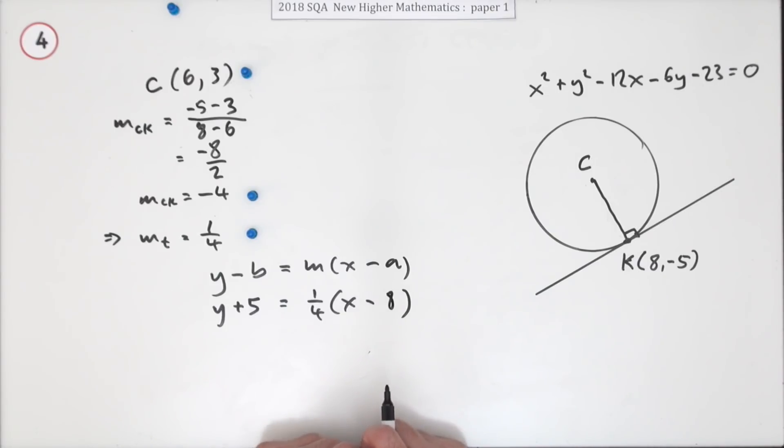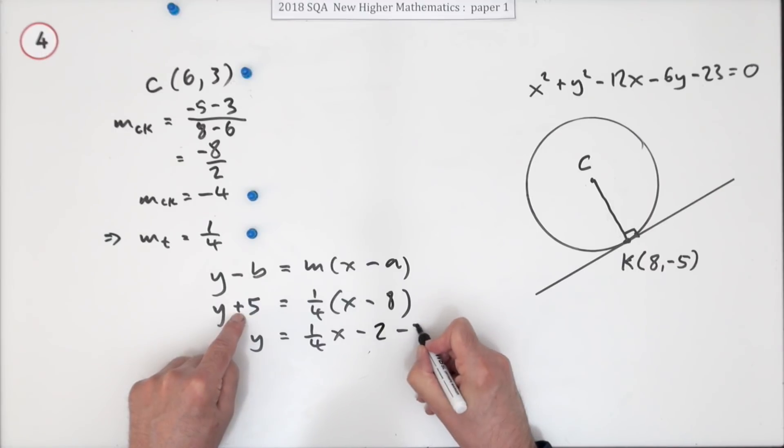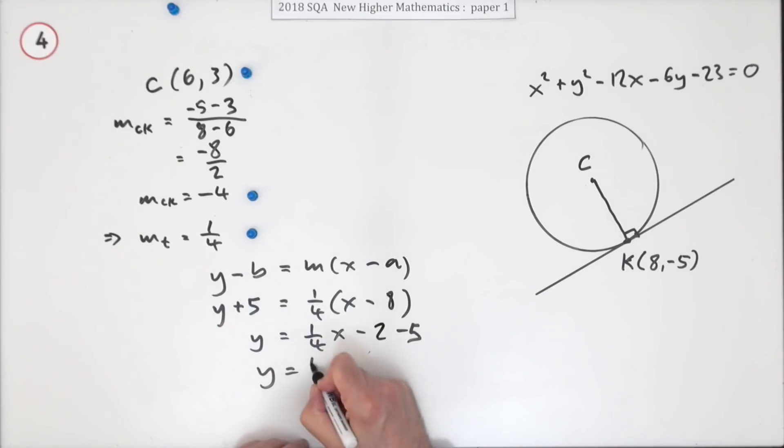Now it's up to you how you want to rearrange that. You can't just leave it like that though, because numbers, constants, need to become a single constant. Usually you get rid of fractions, but when the fraction only belongs to the gradient and the rest of it's neat, it's actually quite handy leaving it like that. A quarter of x, because that dividing makes a 2, bringing that 5 across. That's not a bad form for the answer: y = (1/4)x - 7. Gradient a quarter, cuts the y-axis at -7.